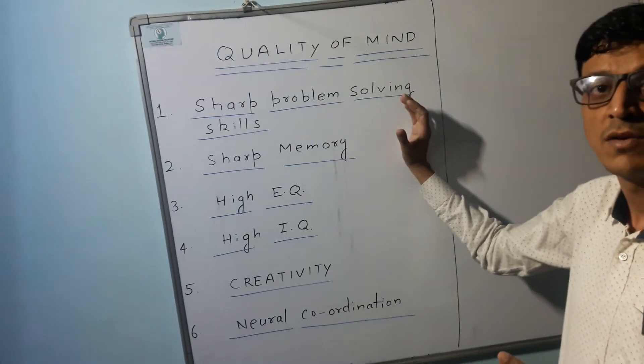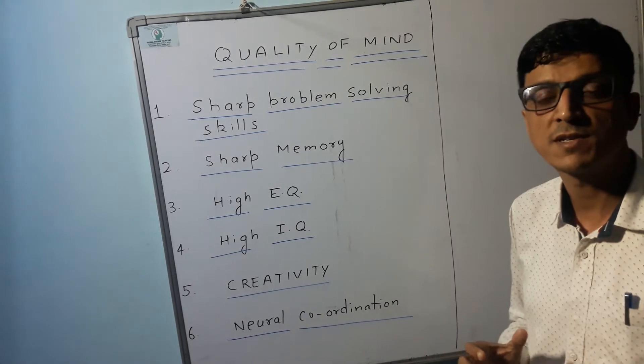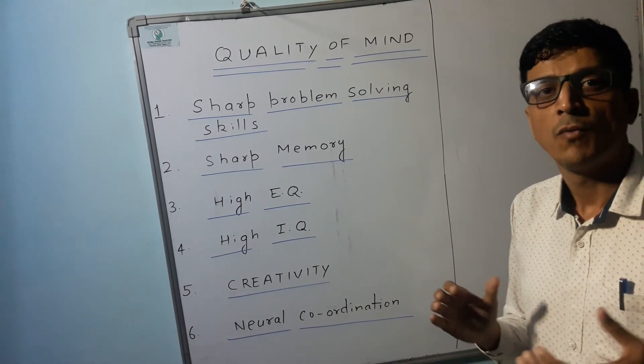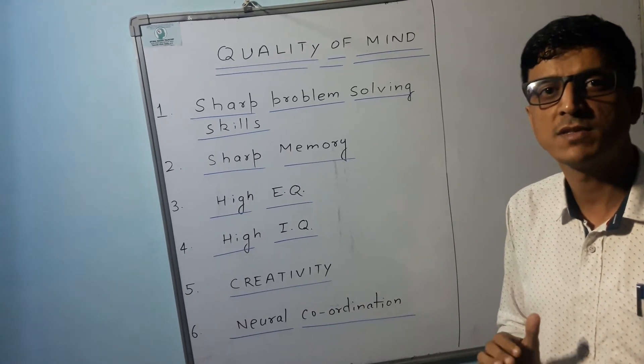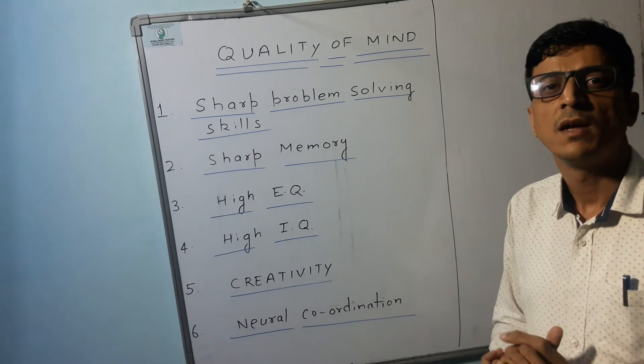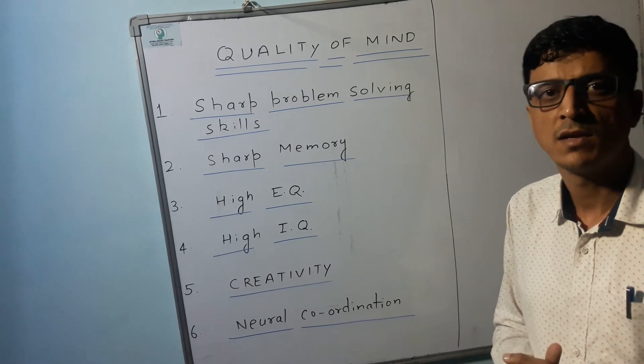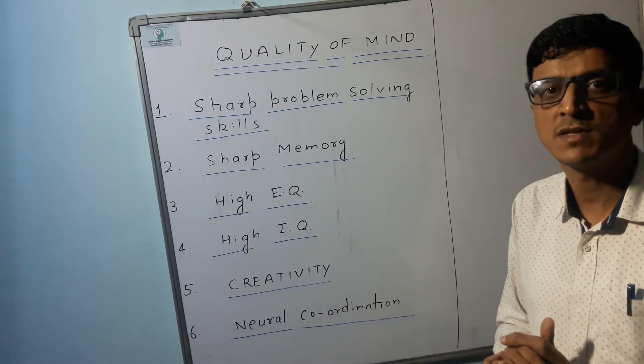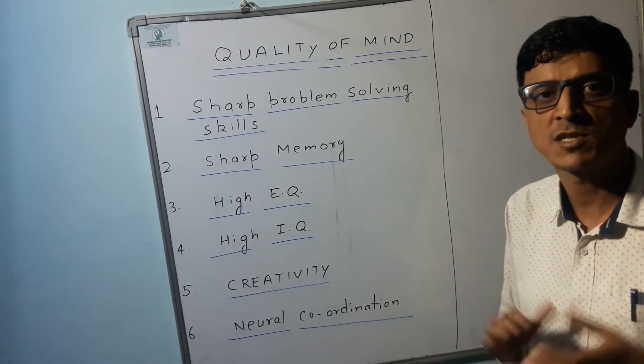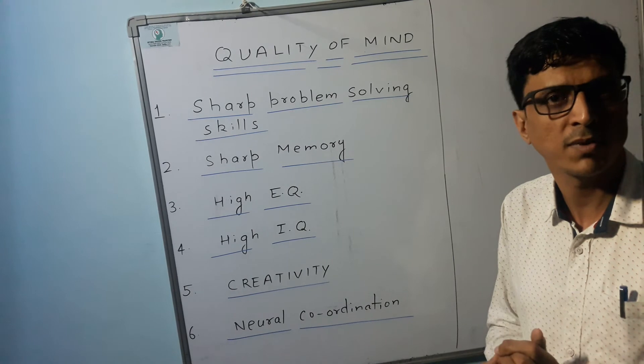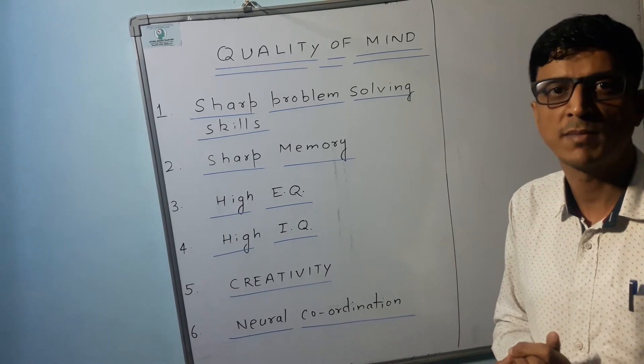So the first thing which is related to the quality of mind is sharp problem solving skill. Whenever you see a problem, the natural inclination of the human mind is a feeling of anxiety, depression, lack of decision making and a state of illusion. So the first thing that you need to have is very sharp problem solving skills. Whenever you see a problem within a fraction of seconds you must be able to judge the source of problem and the mechanism by virtue of which you will solve the problem. Otherwise you won't be able to solve the problem effectively.